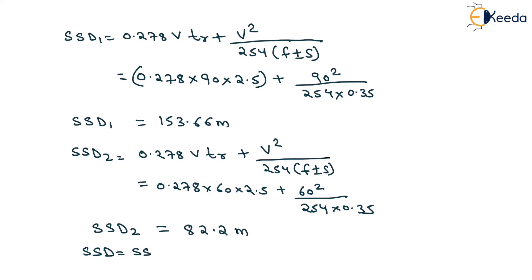Now the total stopping sight distance will be equal to SSD1 plus SSD2. Adding these two values: 153.66 plus 82.2 equals 235.85 meters. That is all about this numerical. Thank you very much, students.